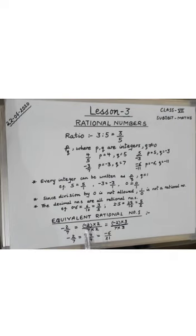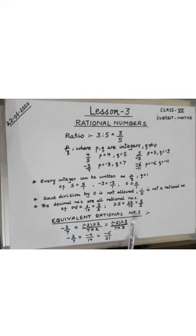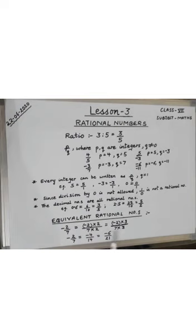Multiplying numerator and denominator of minus 2 upon 7 by 2 gives minus 4 upon 14, which is equivalent to minus 2 upon 7. Multiplying by 3 gives minus 6 upon 21. Therefore, minus 2 upon 7, minus 4 upon 14, and minus 6 upon 21 are all equivalent rational numbers because their values are the same.